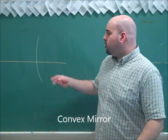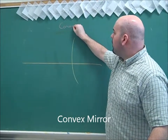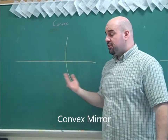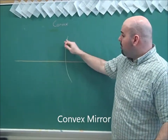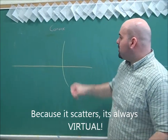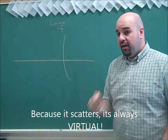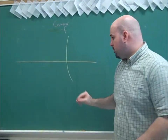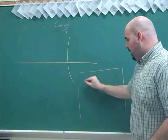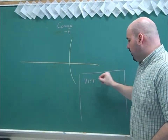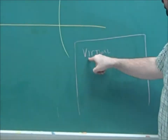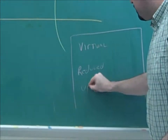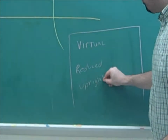Welcome back. We're about to do a convex mirror. In the previous example, I had to discuss whether the object was outside or inside the focal point. This is entirely different — because of its shape, this mirror scatters light. Because it scatters light, it has a negative focal length, and because it scatters light, it will always have the same three properties. This is always going to make a virtual, reduced, and upright image. This is always true for this kind of mirror.